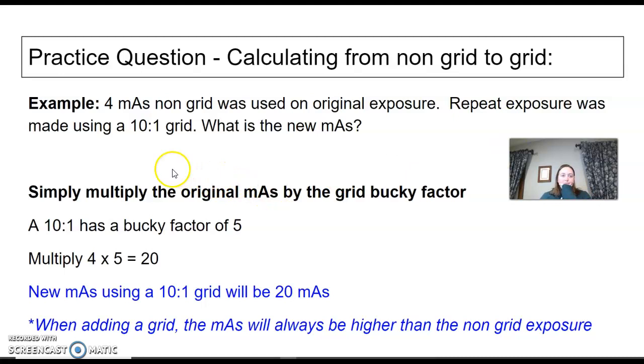Practice question: calculating non-grid to grid. 4 mAs non-grid was used, repeat the exposure with a 10 to 1 grid. What's the new mAs? This one's super easy: you simply multiply the original mAs by the grid bucky factor. We are going to find our 10 to 1 grid that we used, and the grid factor or the bucky factor of that is 5. I'm going to take my original mAs that I used with non-grid, I'm putting a grid on, I now have to increase my technique to get through that grid. I'm going to multiply the 5 by 4, and that gives me 20. My new mAs for that exam using a grid is now going to be 20. Just remember, anytime it's asking you to add a grid, your number is going to go up—it's going to be higher than non-grid, always.